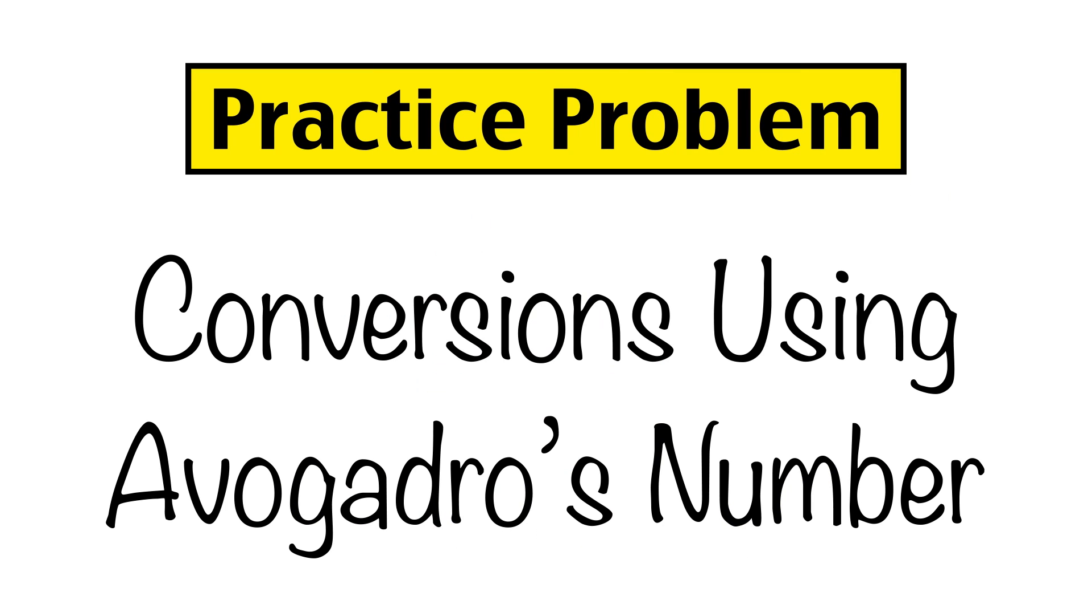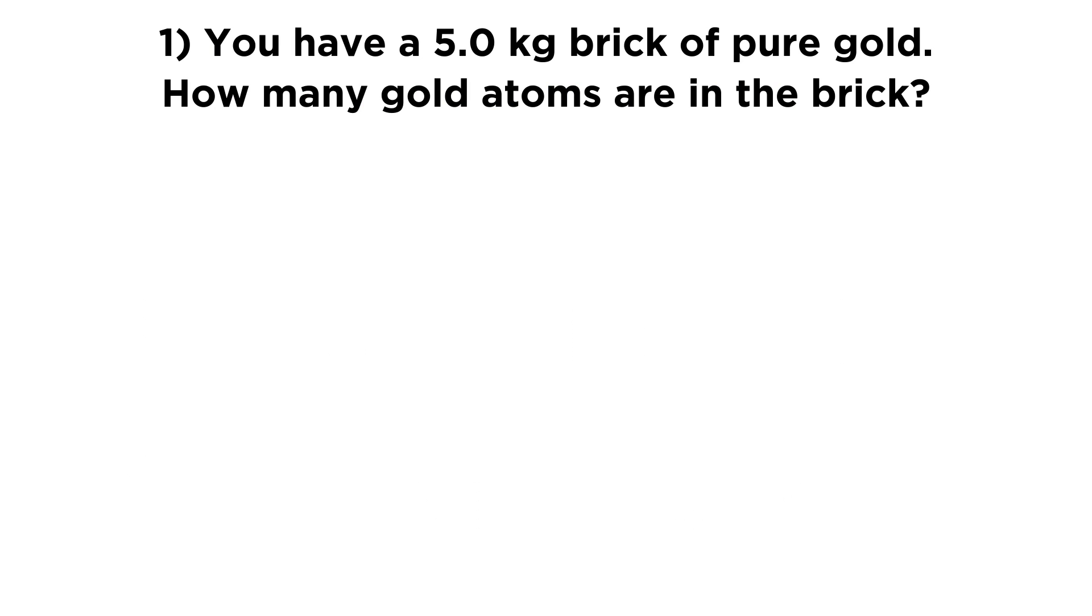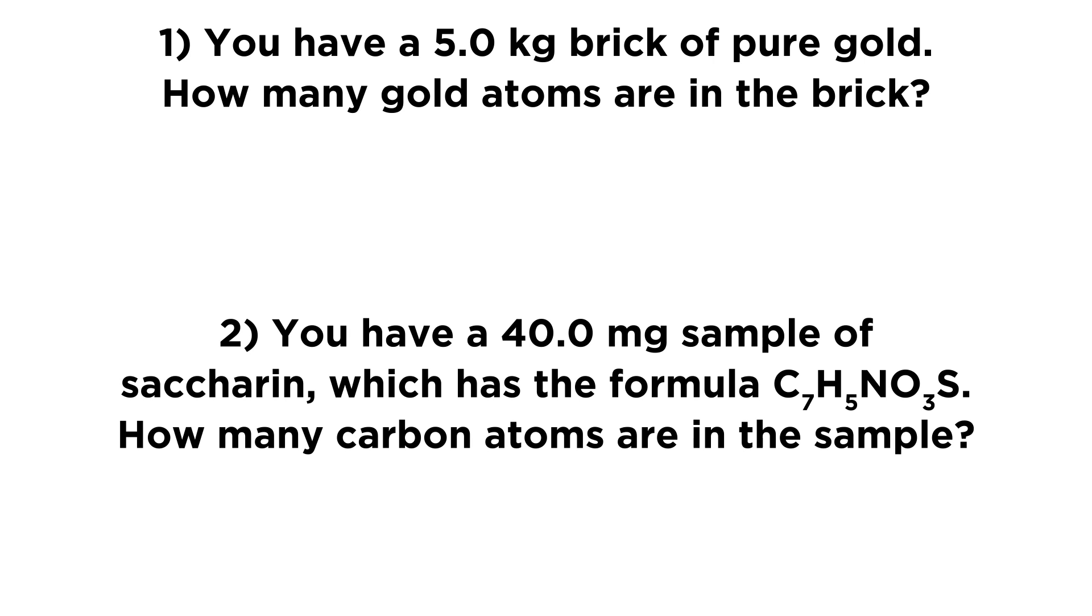So let's go ahead and work through some conversions using Avogadro's number. The first question asks, you have a 5.0 kilogram brick of pure gold. How many gold atoms are in the brick? And the second question asks, you have a 40.0 milligram sample of saccharin, which has the formula C7H5NO3S. How many carbon atoms are in the sample?